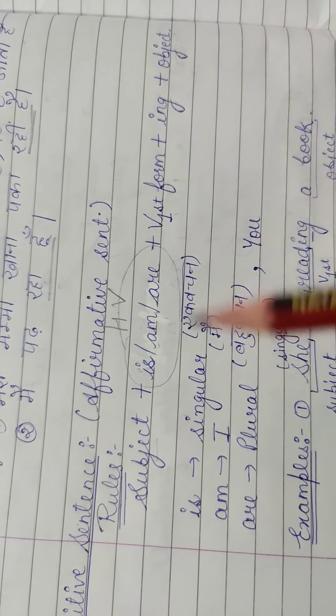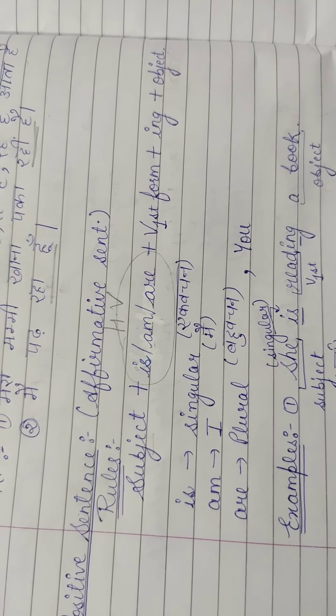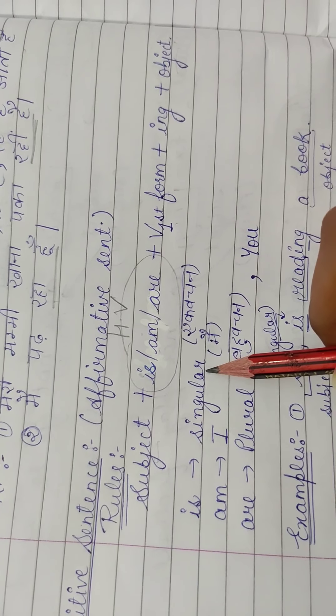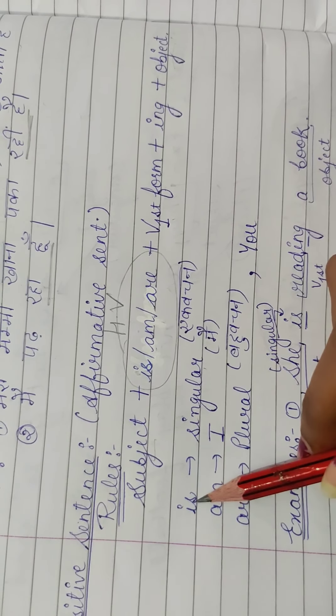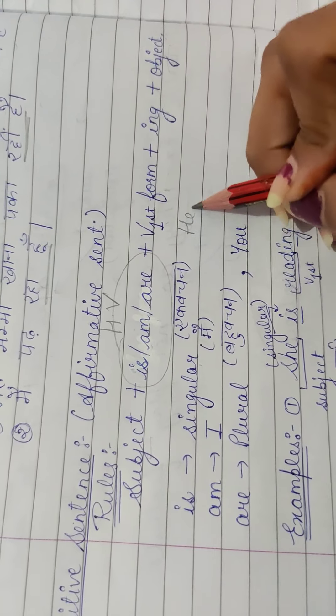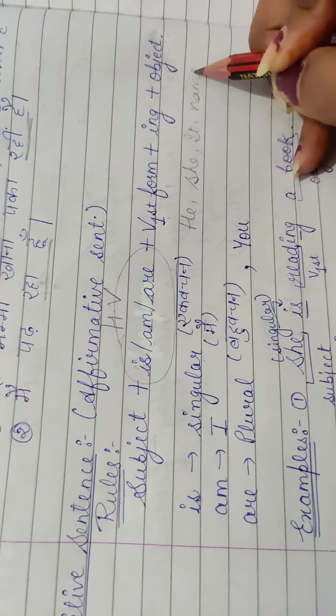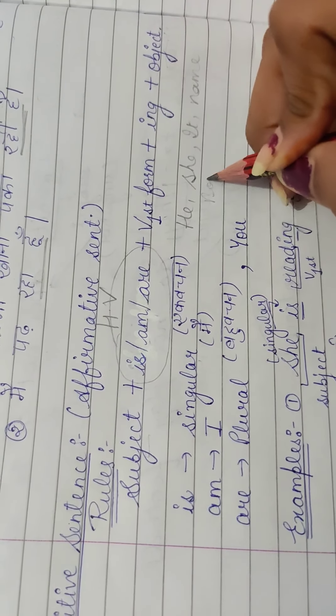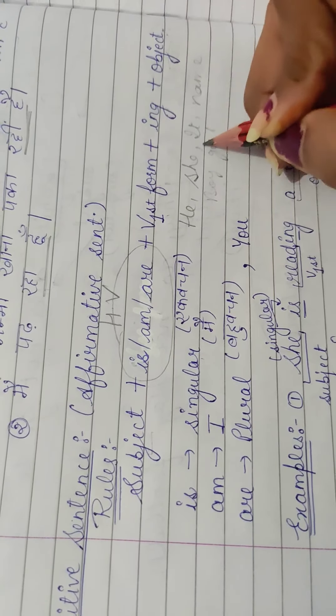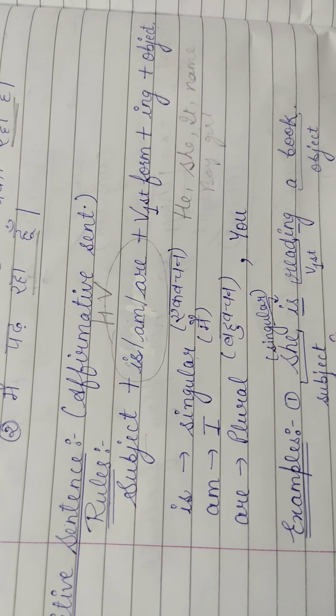Ab ye helping verb hai is, am, are - kab, kab, kis ke saath kya lagate hai? Jab bhi aapka singular hoga subject, to us ke saath maisha is lagate hai. Jiasse aapka he, she, it, kisi ka naam, ya koji bhi aisa singular subject hoga - boy, girl, means jis me hum eek wachan ke baar mein baat karta hai, to is aata hai.